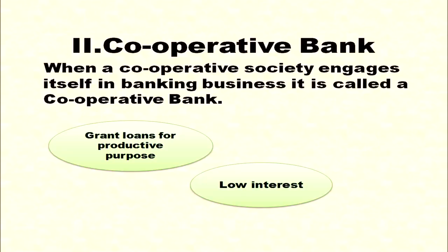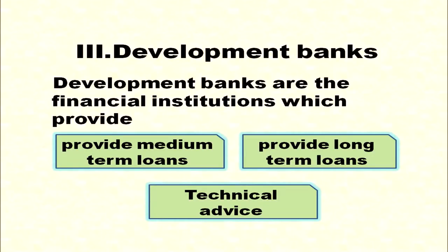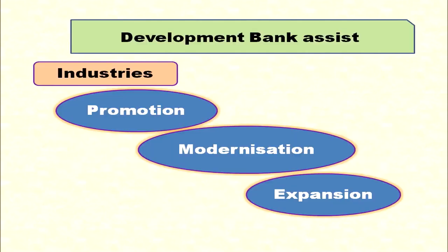When a cooperative society engages in banking business, it is a cooperative bank. These banks grant loans for productive purposes at a low interest rate. Types of cooperative banks include primary credit societies, central cooperative banks, and state cooperative banks. Development banks are financial institutions which provide both medium-term and long-term loans, and also provide technical advice to various business organizations, assisting industries in promotion, modernization, and expansion.